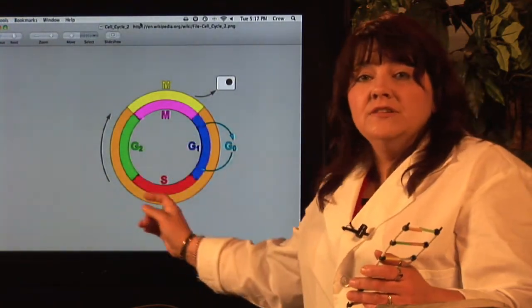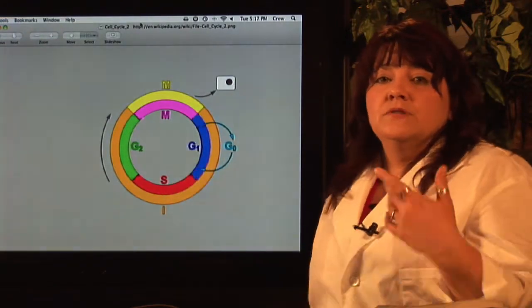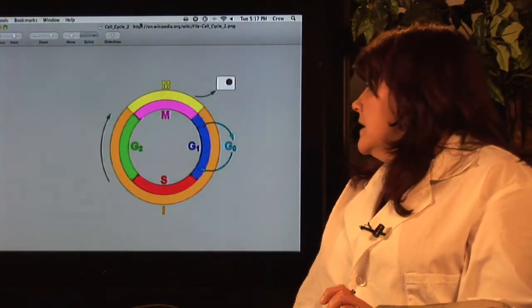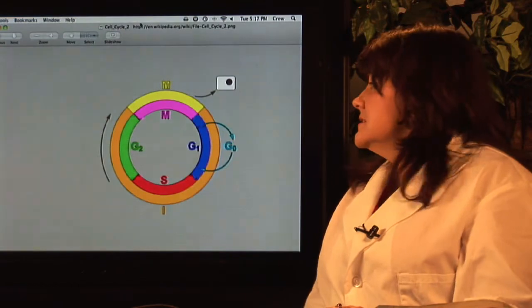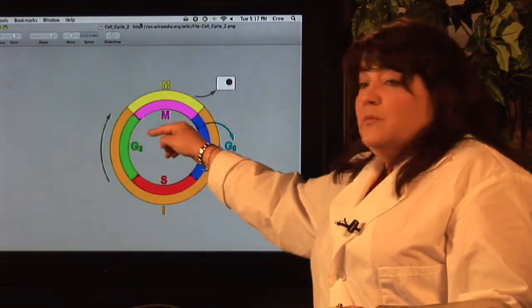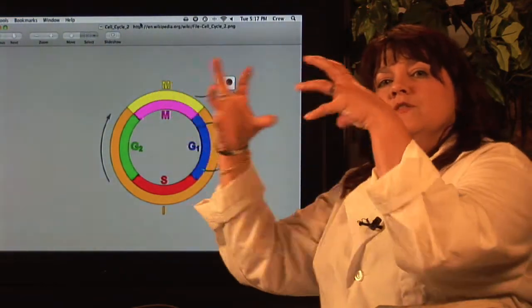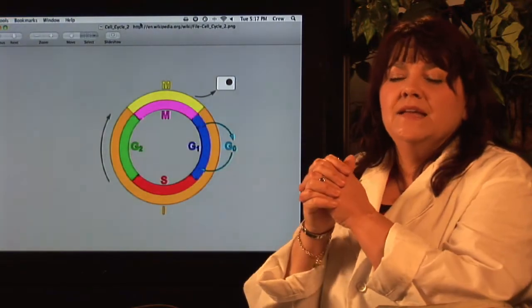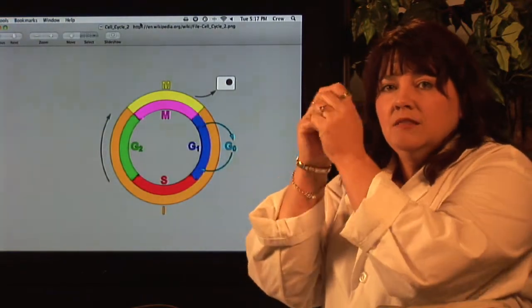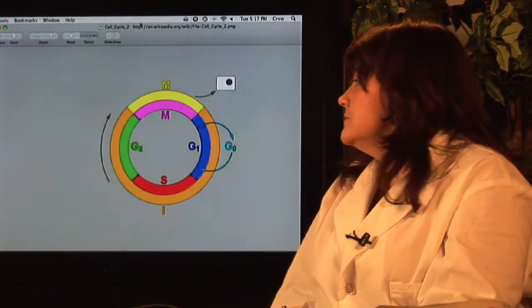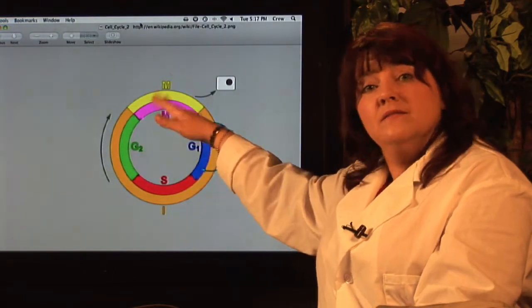Every cell before it replicates has to go through something called the cell cycle. The cell cycle happens in different phases. The M right here represents something called mitosis, and that's where the nucleus of the cell, where all the DNA is, is actually lining up and splitting apart so that those new cells will be exactly alike.